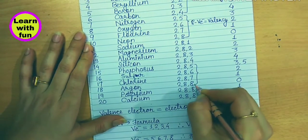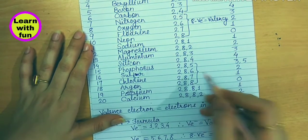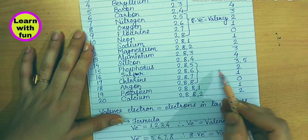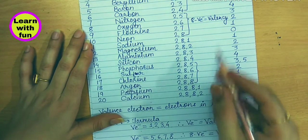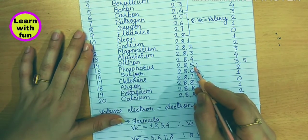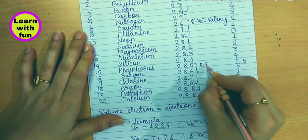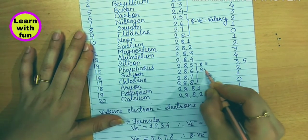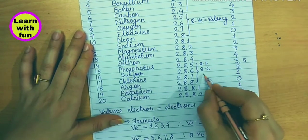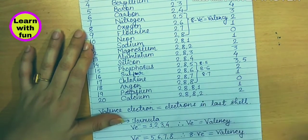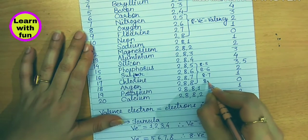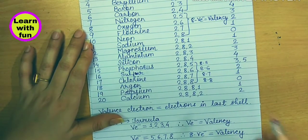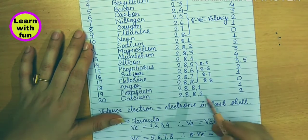For the next group with 5, 6, 7, and 8 outermost electrons (phosphorus, sulfur, chlorine, argon), we apply 8 minus valence electron equals valency: 8 minus 5 equals 3, 8 minus 6 equals 2, 8 minus 7 equals 1, and 8 minus 8 equals 0. This is how we follow the formula to get the valency.